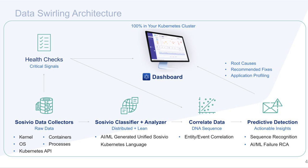At a high level, Sasevio uses data swirling to first collect data from the entire stack. It then compresses and translates everything to unified Sasevio language. It then correlates the data to form a clear picture of what is happening inside your cluster, and it then automatically detects issues — all in real time. Data swirling also allows us to provide fully automated application resource profiling, allowing you to properly allocate resources for your cloud-native applications, fully optimizing performance and cost savings for your entire Kubernetes environment.